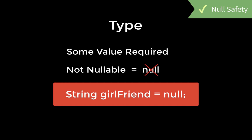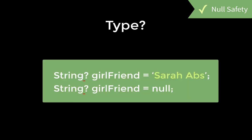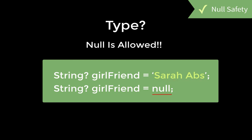On the other hand, if you are trying to put a null value to a normal type, then it will lead to a compile error. Adding a question mark makes the type nullable and allows us to pass a null value to this field. So we can have now a real value or a null value if you have a question mark operator.